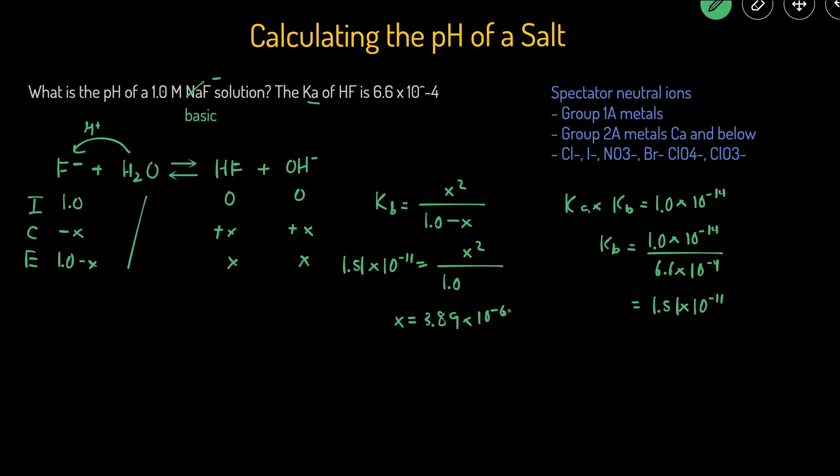And X is equal to the concentration of hydroxide. So that's the concentration of the OH. Now we have OH. We can figure out the POH, which is going to equal negative log of 3.89 times 10 to the negative 6. That's 5.41. And then lastly, pH is just 14 minus POH. So 14 minus 5.41. And that is 8.59.